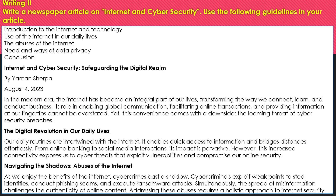Writing Task 2. Write a newspaper article on internet and cyber security. Use the following guidelines: introduction to the internet and technology, use of the internet in our daily lives, the abuses of the internet, need and ways of data privacy, conclusion. Internet and Cyber Security: Safeguarding the Digital Realm. By Yaman Sherpa, August 4, 2023. In the modern era, the internet has become an integral part of our lives, transforming the way we connect, learn, and conduct business. Its role in enabling global communication, facilitating online transactions, and providing information at our fingertips cannot be overstated. Yet, this convenience comes with a downside — the looming threat of cybersecurity breaches.